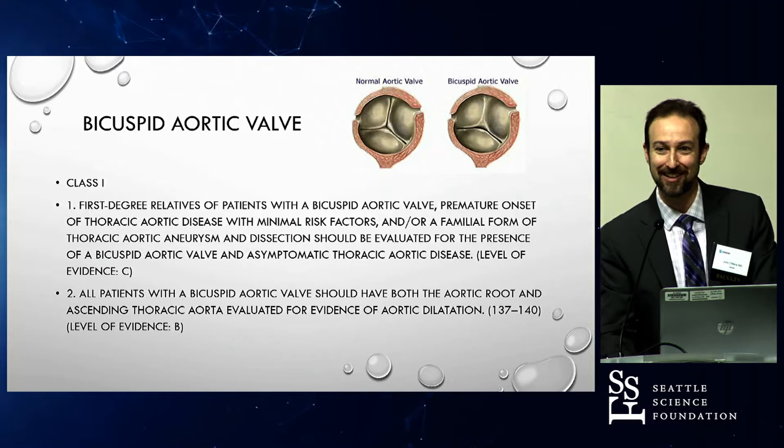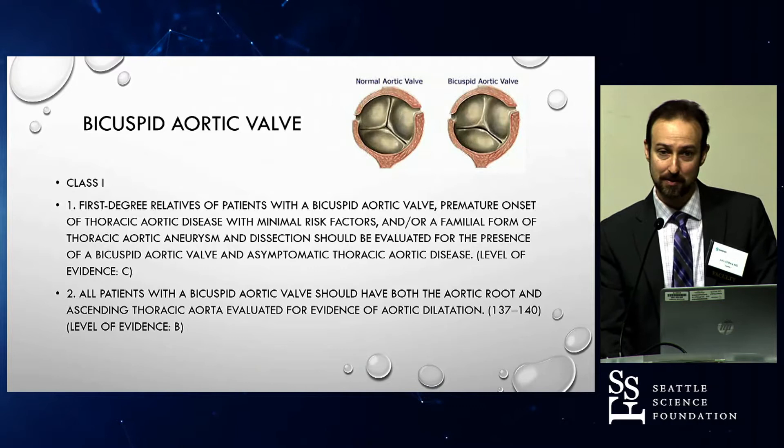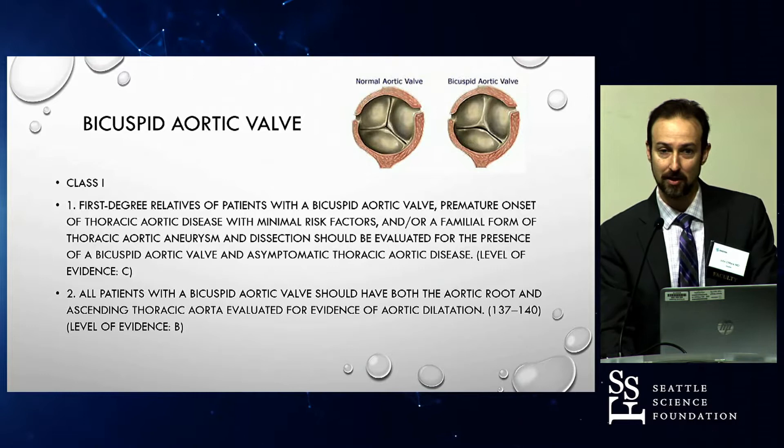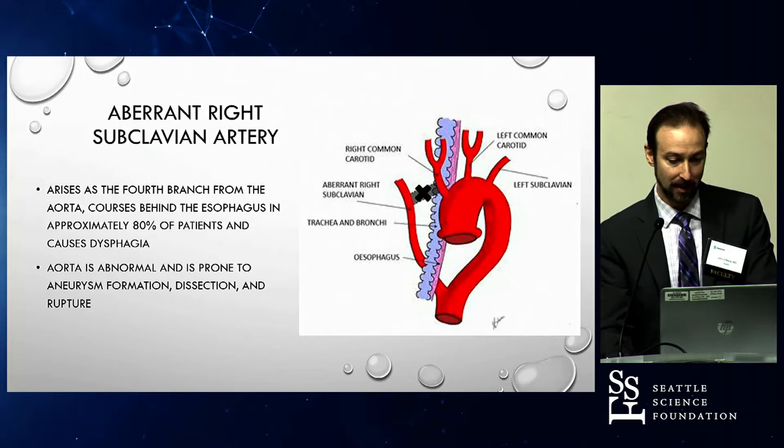Basically, all patients with bicuspid aortic valve — and this is in the guidelines — should have imaging of the aortic root and the ascending thoracic aorta evaluated for any evidence of dilation, and then also first-degree relatives as well.